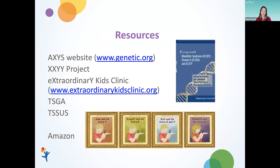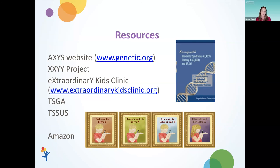There are great resources available through the AXIS website, as well as the XXYY Project and the Extraordinary Kids Clinic's clinical website, which has information that may apply to an individual with mosaicism. Additionally, because we see mosaicism that includes a 45X cell line — the diagnostic cell line of Turner syndrome, often in combination with trisomy X or other cell types — two other helpful organizations are TSGA, the Turner Syndrome Global Alliance, and TSSUS, the Turner Syndrome Society of the United States. These organizations can help educate individuals about the medical and developmental impacts associated with the 45X cell line. We've also developed a series of books available online to help children understand a diagnosis and aid parents in disclosure.